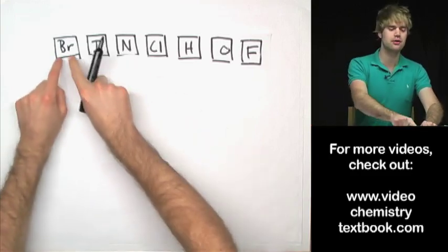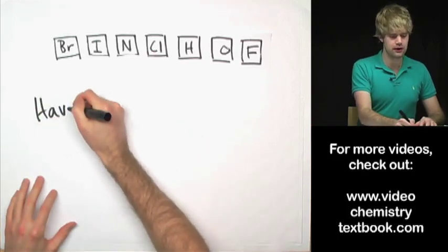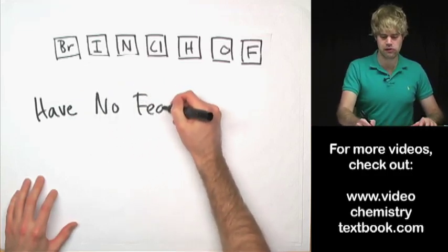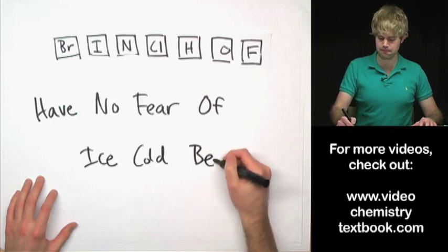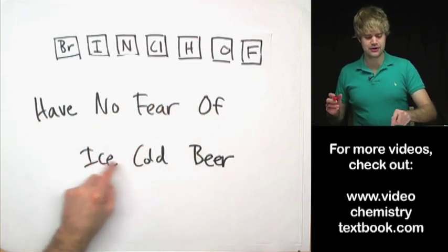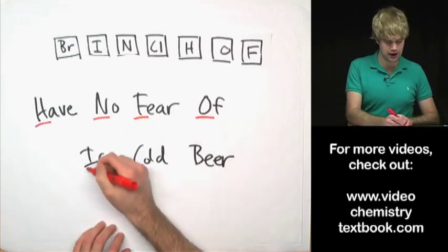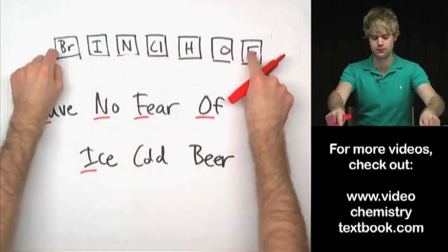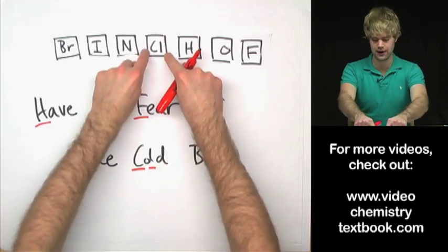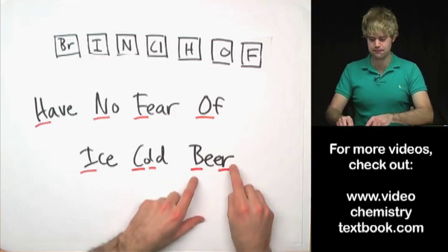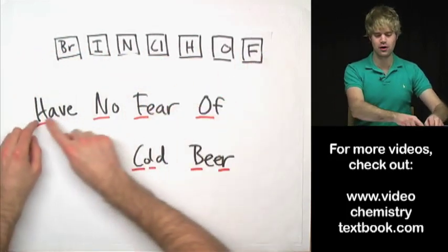Here's another way that you can remember them. Some people instead of using the chemical symbols as letters like to remember a phrase. And this one gets used a lot. People say, have no fear of ice cold beer. We want to talk about the letters that are in each of these words. So we have H for hydrogen, N for nitrogen, F for fluorine, O for oxygen, I for iodine. It gets a little bit tricky with these last two, which is actually why I prefer Brinkelhoff. But anyway, cold. Don't be confused and think that the C stands for carbon. It's CL, chlorine, and then B and the R at the end of beer, the R at the end of beer, is bromine.